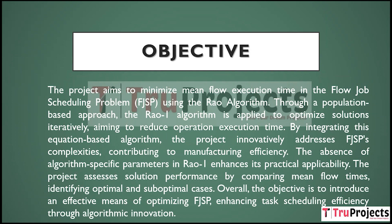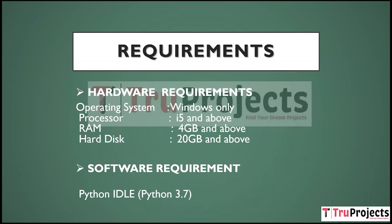RAW ONE's lack of algorithm-specific parameters enhances its practical applicability. The project measures performance by comparing mean flow times and finding optimal and suboptimal scenarios. For hardware requirements: Windows OS, i5 processor or above, 4GB RAM or above, and 20GB hard disk or above. For software requirements: Python IDLE version 3.7 is needed.